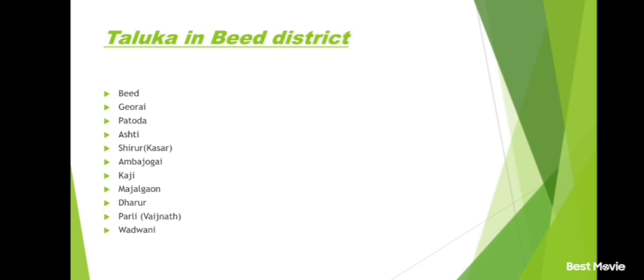Aurangabad district and its talukas: Aurangabad, Sillod, Gangapur, Paithan, Kannad, Vaijapur, Phulambri, Khultabad and Gangapur.